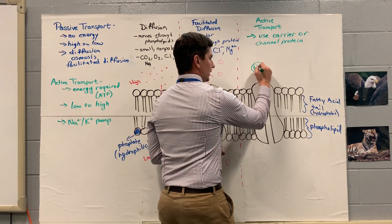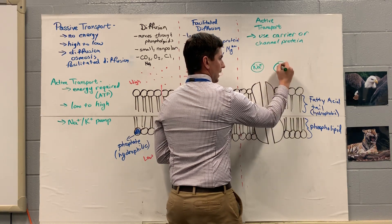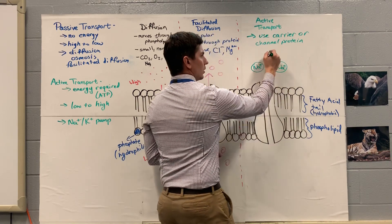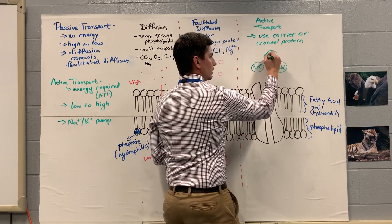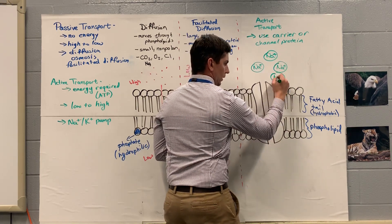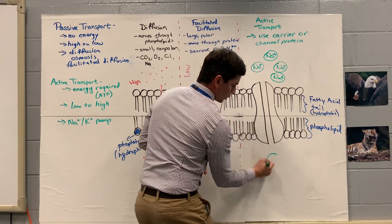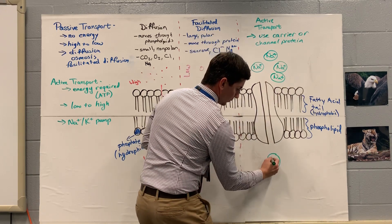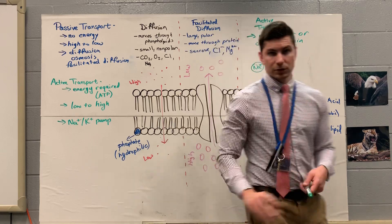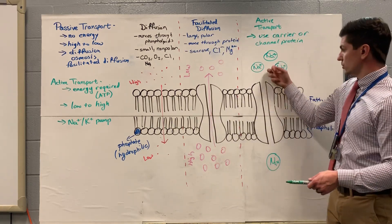Let's say we have Na+. The sodium and the potassium — Na and K — are the main ones we are going to move through active transport. These are the most common examples. For this one, we're going to have our sodium down here and we're going to have our sodium up here.